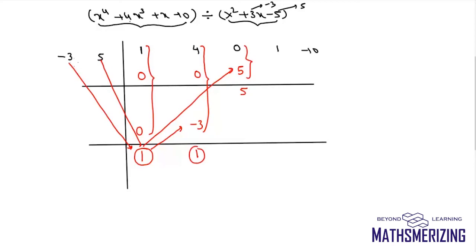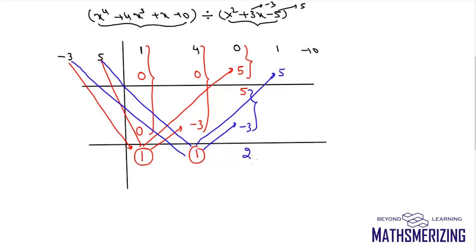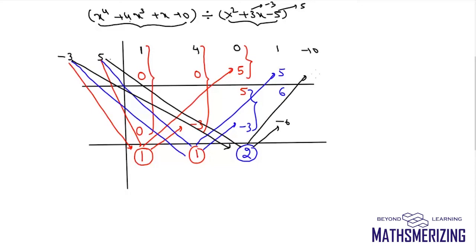I multiply −3 with 1 and put −3 there, and multiply 5 with 1 and put +5 there, then add: 5 − 3 = 2 and 1 + 5 = 6. Now −3 × 2 = −6, I put it there, and 5 × 2 = 10, I put it there. So 6 − 6 = 0 and 10 − 10 = 0.